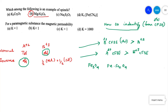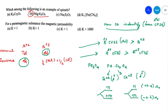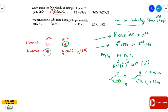Now we calculate the CFSE value. Fe²⁺ is a D6 system. When you calculate the CFSE for Fe²⁺ D6, it is 4 electrons in the T₂g level and 2 in the Eg level. The CFSE value is: (4 × −0.4Δo) + (2 × 0.6Δo) which gives −0.4Δo. For Fe³⁺ which is a D5 system (half-filled), the CFSE value is 0.